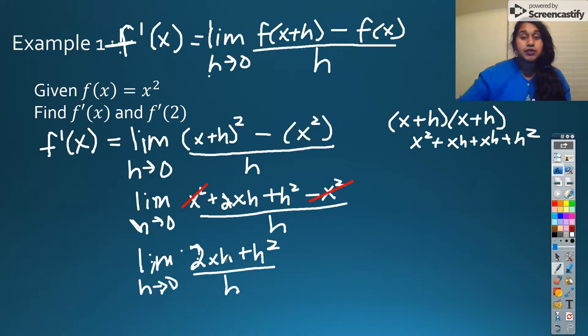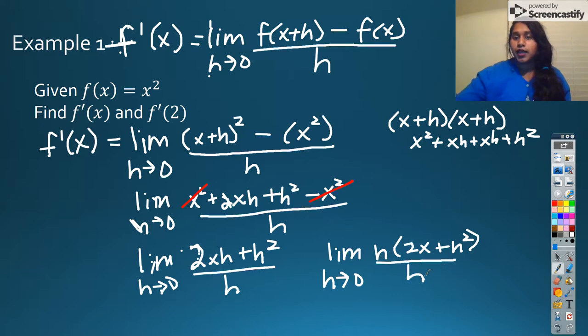Well, guess what? Now I've got something else I can simplify. I've got a factor right there. I can factor out an h. So my limit as h approaches 0, I can put that h out front, 2x plus h all over h. And guess what? Now I see something else I can cancel out.